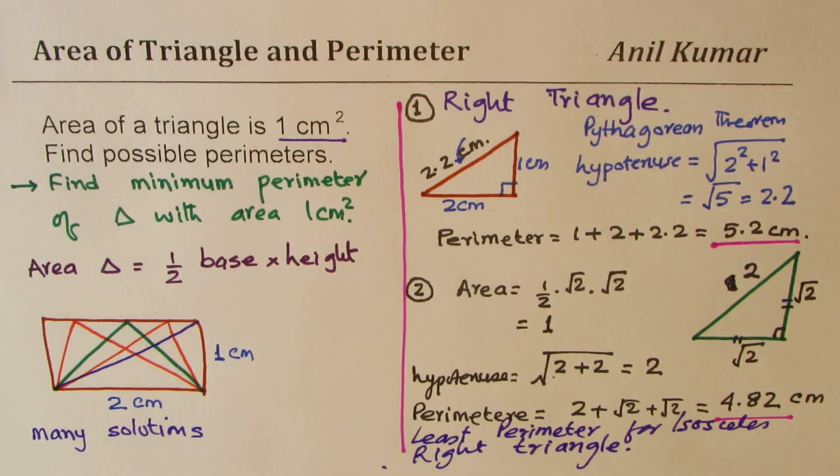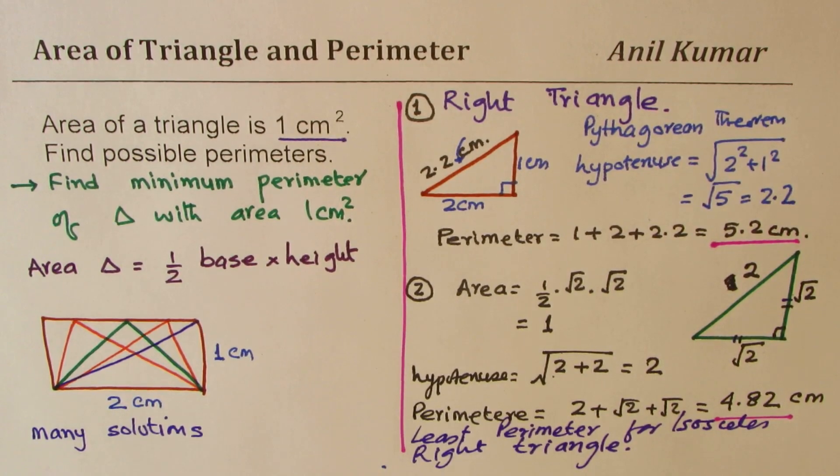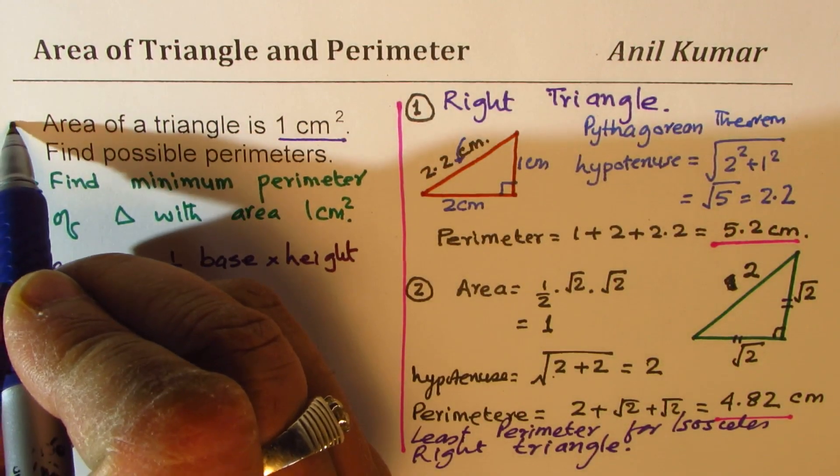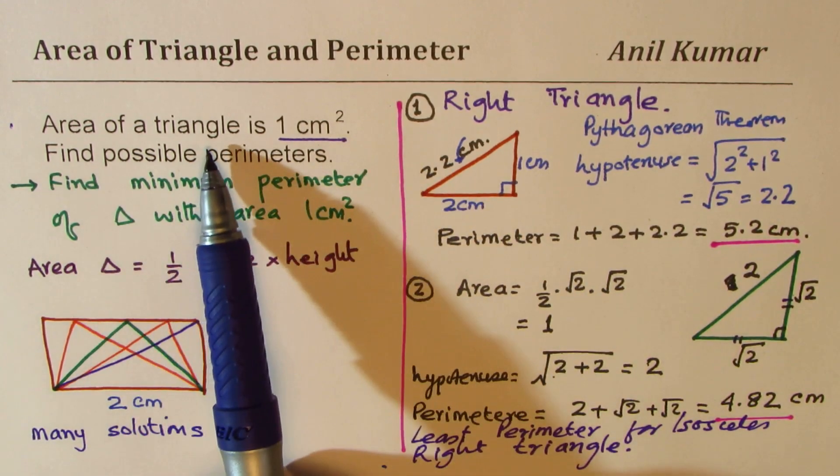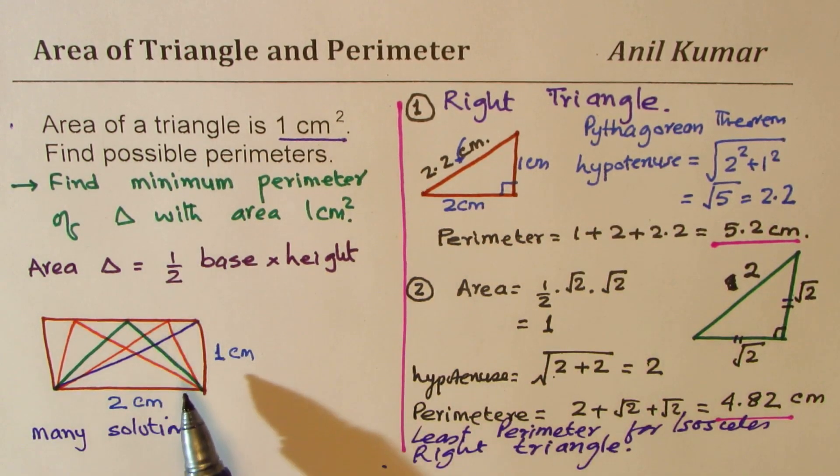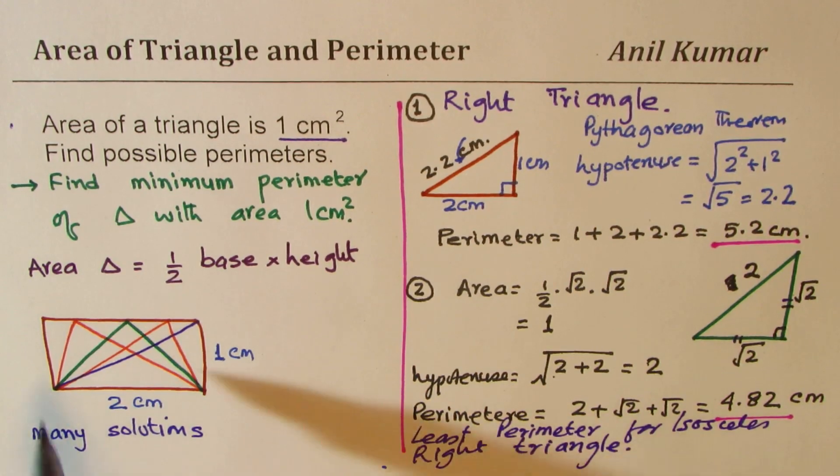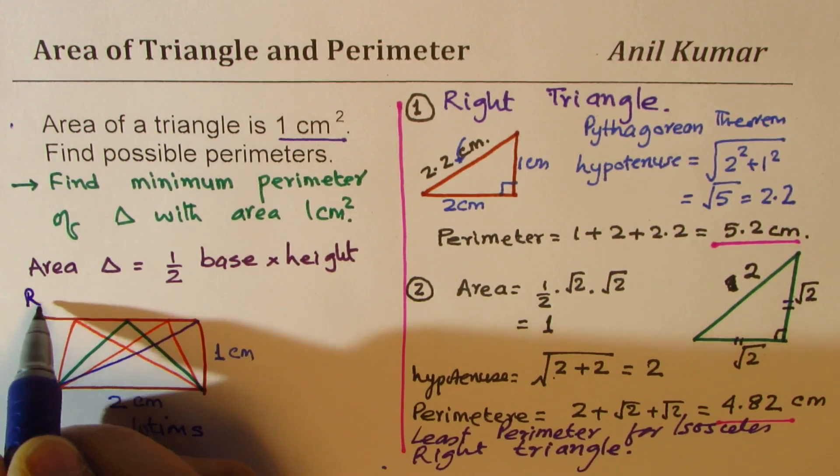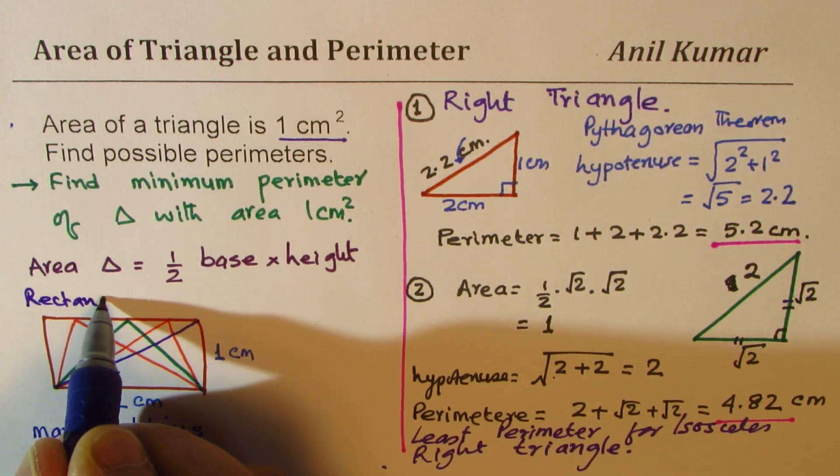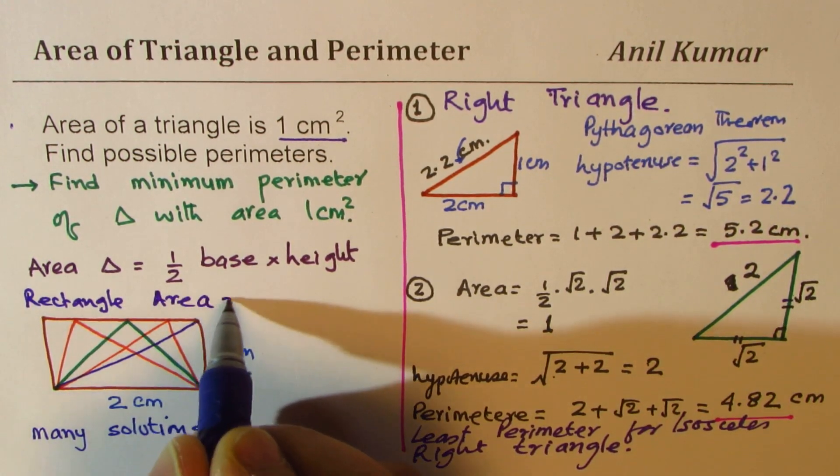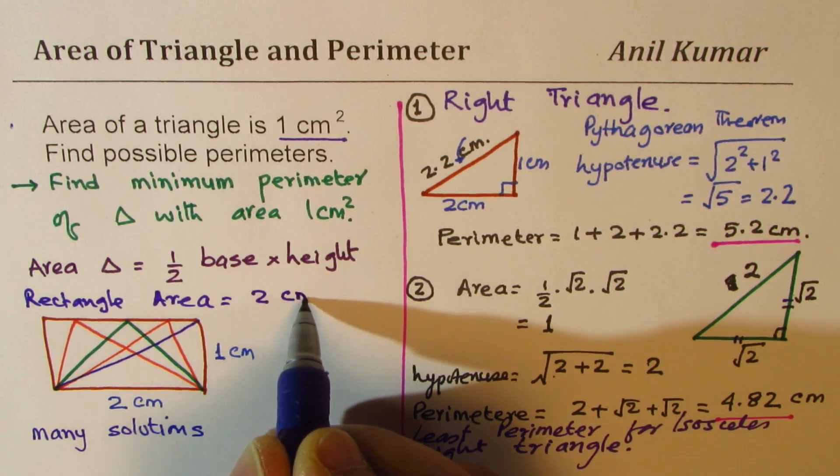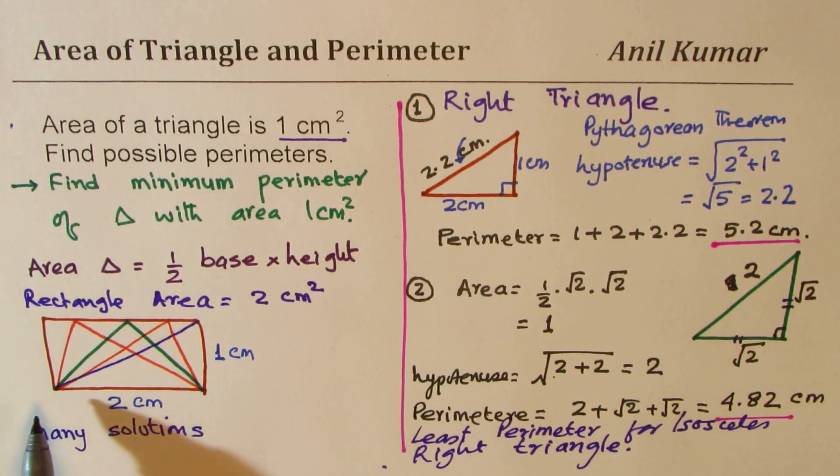Now let us summarize our learnings. We began with area of a triangle being one centimeter square. To find such triangles, it is important to make a rectangle with 2 centimeters squared. So here we say rectangle area equals to 2 centimeters squared.